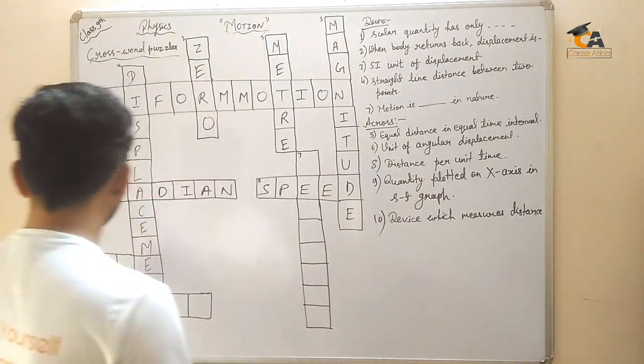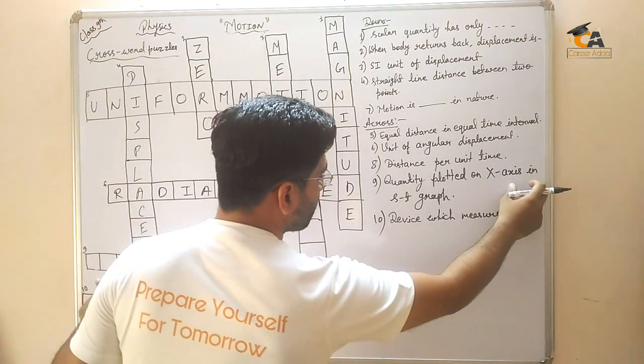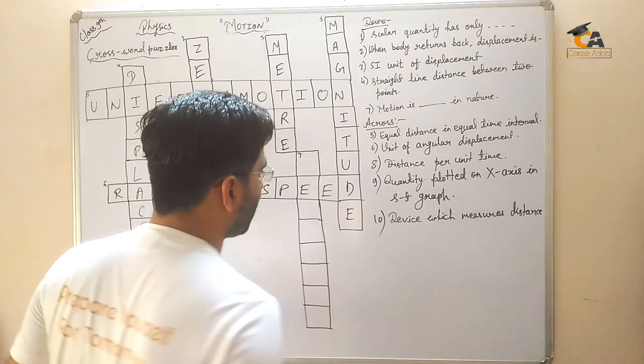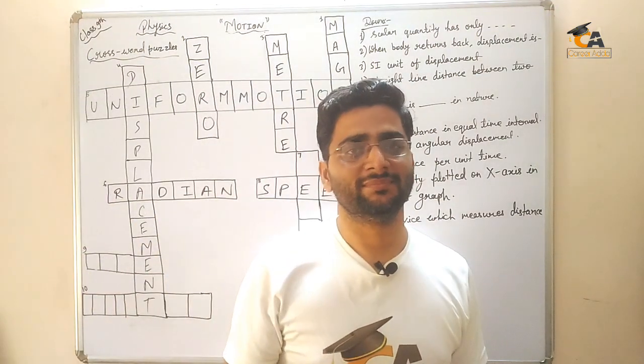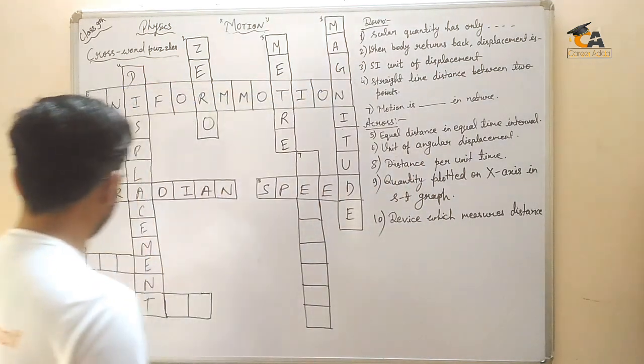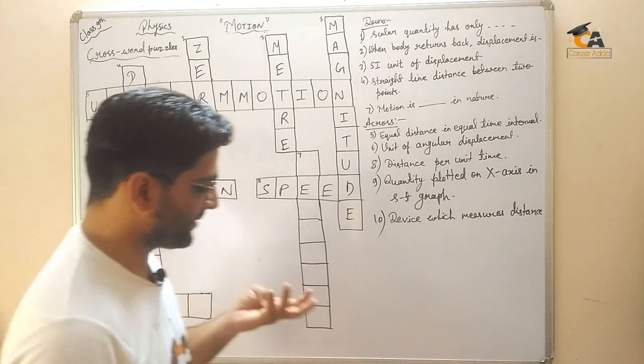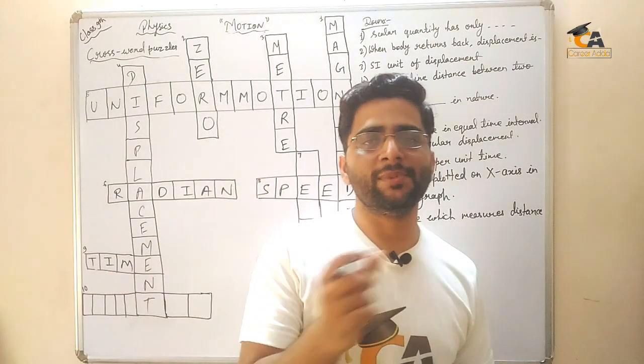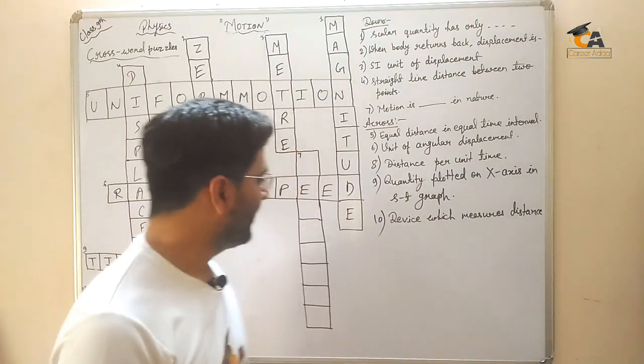Next. Ninth number. Quantity plotted on x-axis is in s-t graph. In s-t graph, which quantity plot is in x-axis? Quick. Time. I was told that s-t-o, v-t-o, a-t-o. What do we call x-axis? Time. Okay.